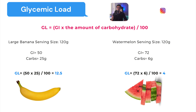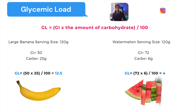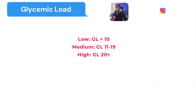By comparison, watermelon with the same 120g serving size has a high GI of 72, but only 6 grams of carbs, so its glycemic load is only 4. The GL of watermelon is much less than that of a banana because, even though watermelon's GI is 72, it's mostly water and contains only 6g of carbs compared to 25g in a large banana. GL for a given serving can be categorized as: low (less than 10), medium (11–19), and high (20 and above).